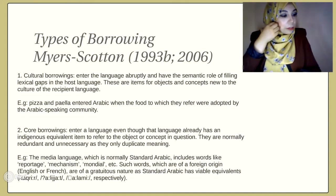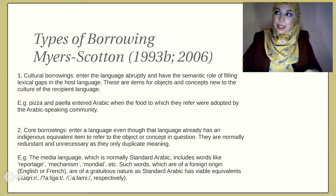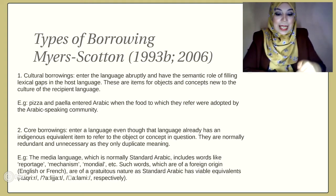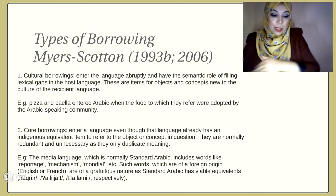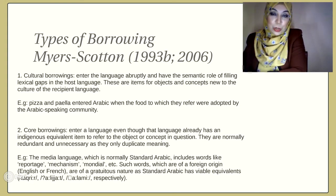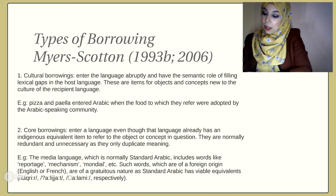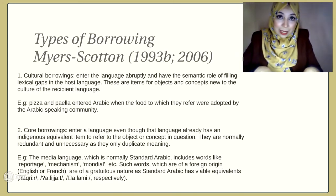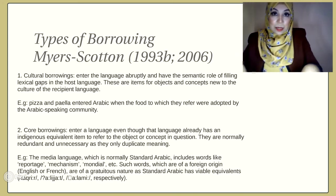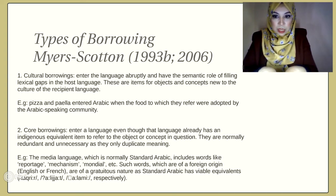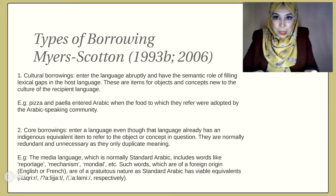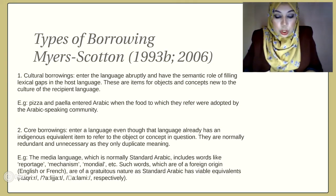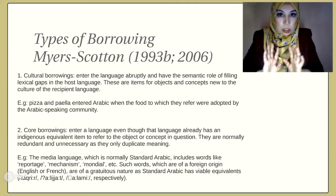Another example is 'aliyat' versus 'mechanism.' 'Aliyat li-'amal shay' is equal to 'mikanizmat 'amal shay'' — the mechanism of doing something. So 'aliyat' and 'mechanism' are equal and refer to the same thing, but still people, journalists, and media language insist on using both lexical entries.